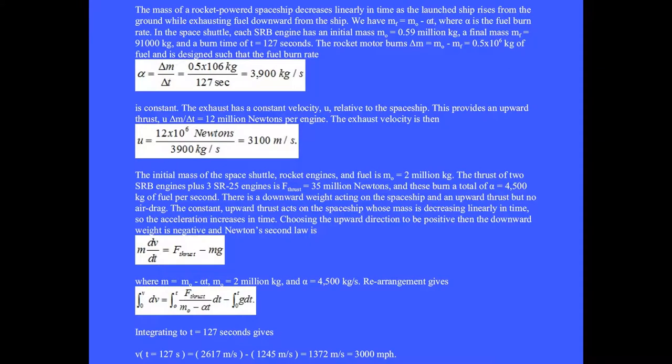The mass of a rocket powered spaceship decreases linearly in time as the launch ship rises from the ground while exhausting fuel downward from the ship. We have mass at any time equals the initial mass m0 minus alpha t where alpha is the fuel burn rate. In the space shuttle, each solid rocket booster engine has an initial mass of 0.59 million kilograms.